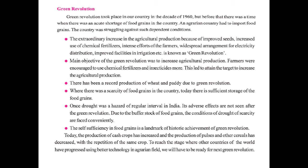The main objectives of the Green Revolution were to increase agricultural production. Farmers were encouraged to use chemical fertilizers and insecticides, leading to record production of wheat and paddy. Where there was scarcity of food grains, today there is sufficient storage. Once droughts were a hazard at regular intervals in India, but their adverse effects are not seen after the Green Revolution. The self-sufficiency in food grains is the landmark of the Green Revolution. However, today the production of cash crops has increased while pulses and other cereals have decreased.